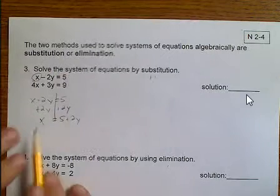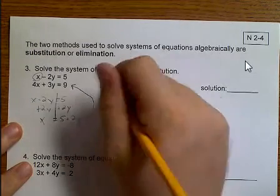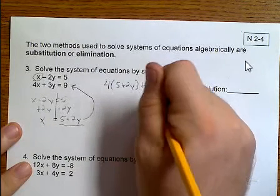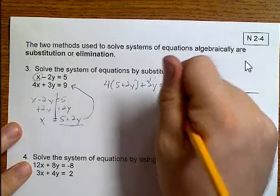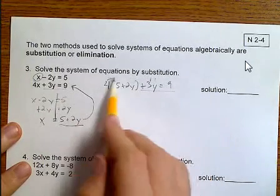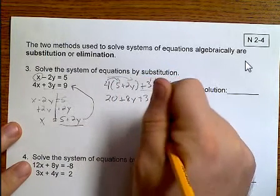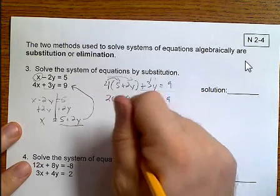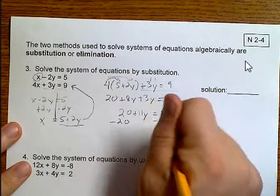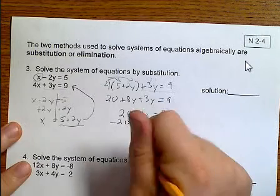Now that I know what x is, I take and I plug it back into my other equation. So instead of x, I'm going to put 5 plus 2y. Continue writing my equation. Notice I still have the plus 3y equals 9. Now I'm going to solve, first by distributing. 20 plus 8y plus 3y equals 9. 20 plus 11y equals 9, subtract 20, 11y equals negative 11. Divide by 11, y equals negative 1.